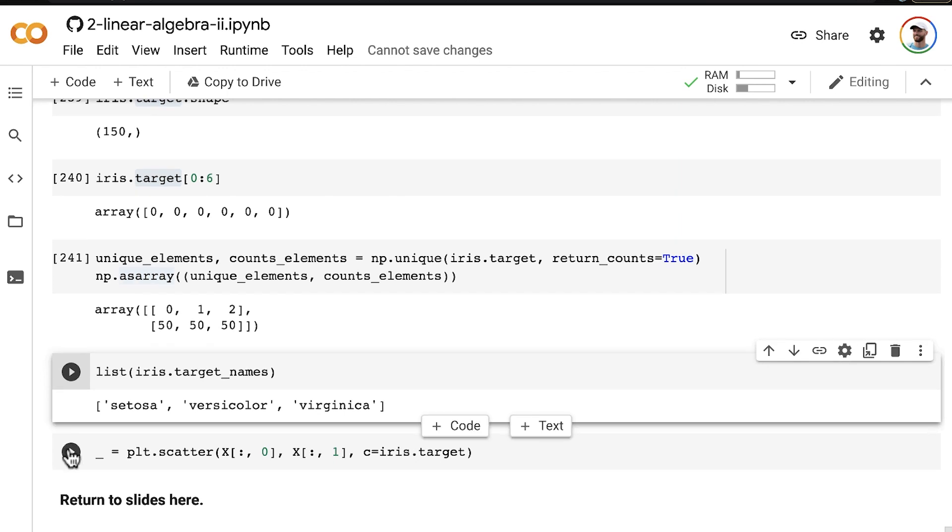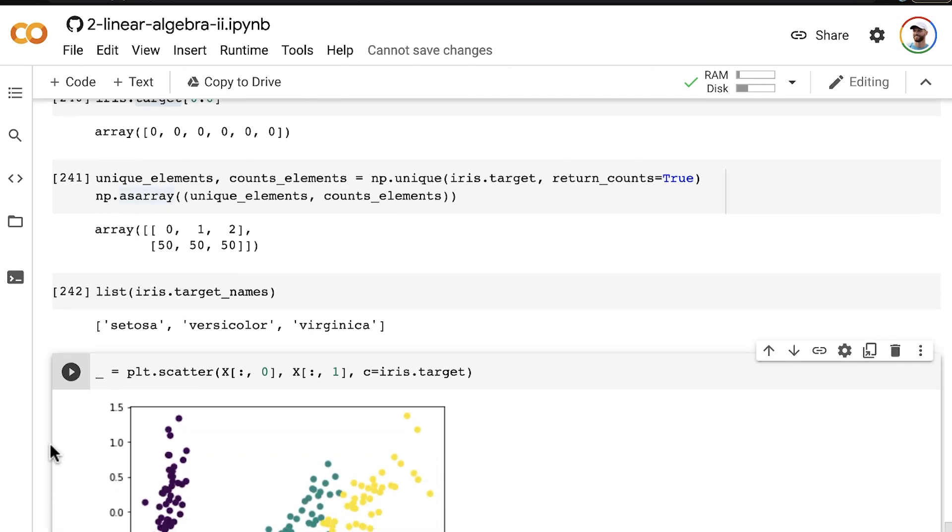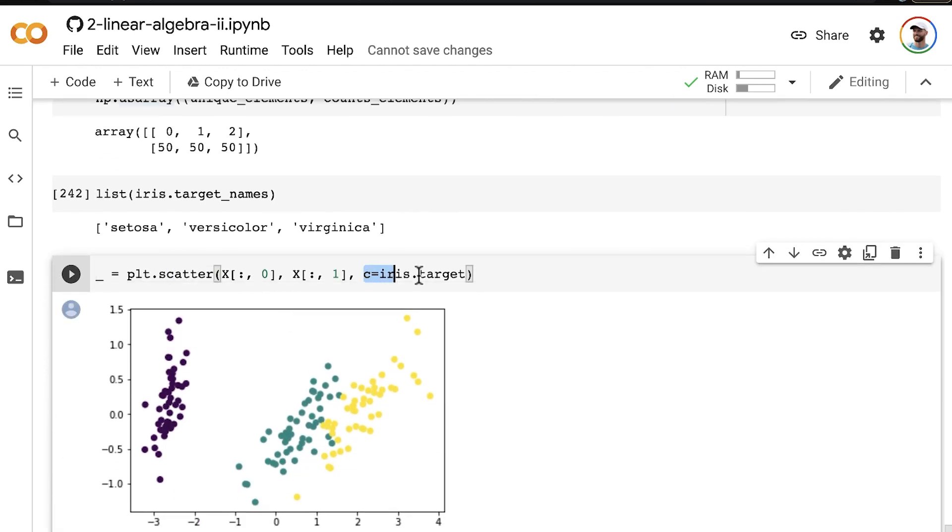We're going to add this additional color option to our scatter plot alongside our two principal components. And now we can see clearly that the three flowers, the three species of iris,